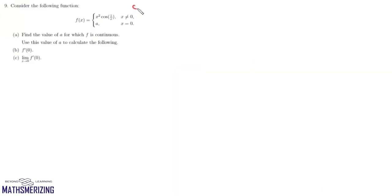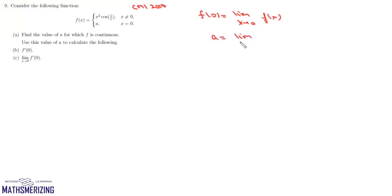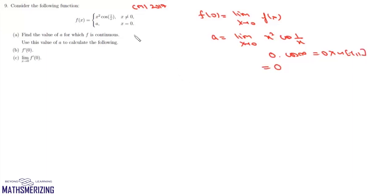A similar question was asked in the CMI 2017 paper. Consider f(x) = x²·cos(1/x) when x ≠ 0, and a when x = 0. The first part asks: find the value of a for which f is continuous. For continuity, f(0) = a must equal limit x→0 of x²·cos(1/x) = 0·cos(∞) = 0. So a = 0.